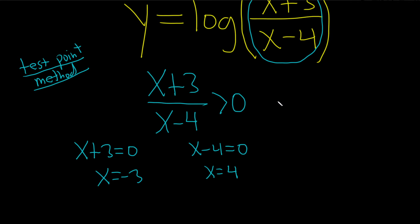The next step in the test point method is to actually plot these numbers and pick test points. So I'll do that over here. So here's negative 3, and here's 4. And there's a big shortcut we can take, but first let me explain what we actually have to do.